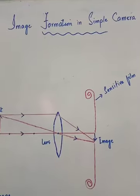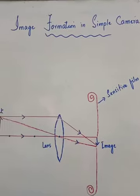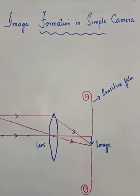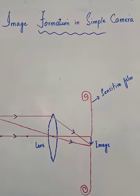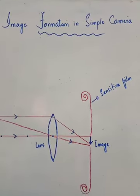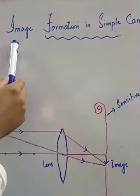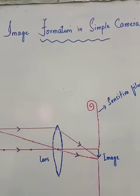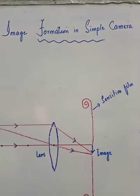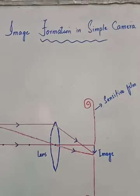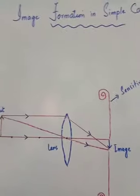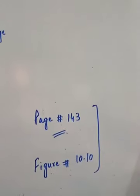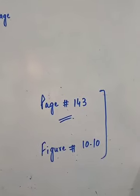In a simple camera today, important article: image formation in a simple camera. What is the procedure? How is the image being created in a simple camera? Today we have to study this topic. For that purpose, you have to read very carefully page number 143 and figure 10.10. This is your basic task.